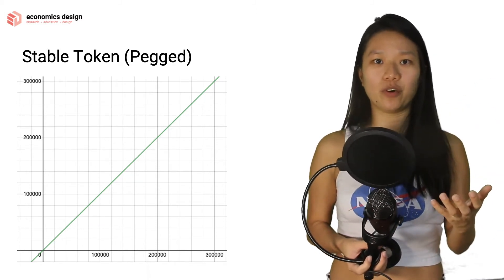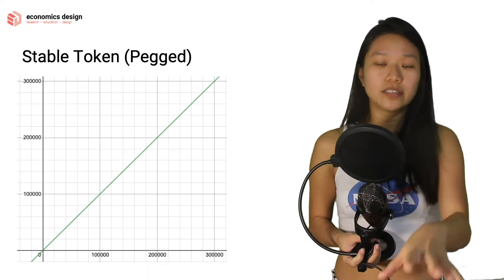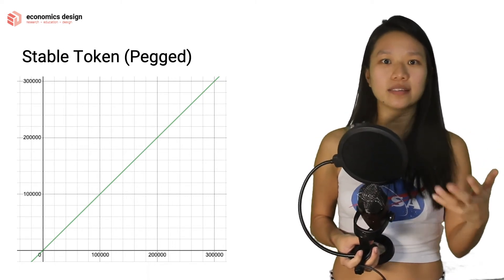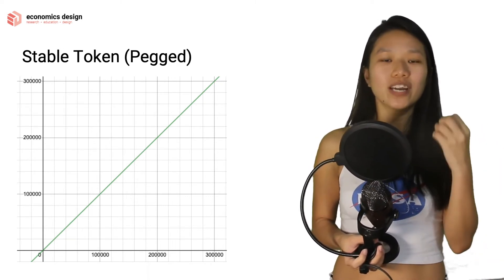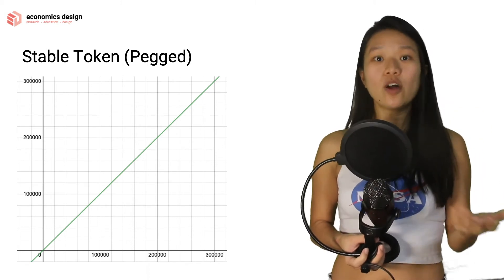It's very simple, it's very straightforward. But the thing is, it's so straightforward - what kind of value is the token bonding curve bringing? What kind of economic value is it bringing? It's not bringing much, right?